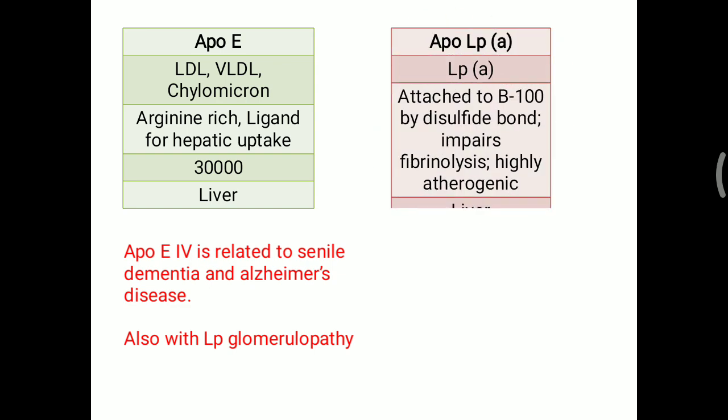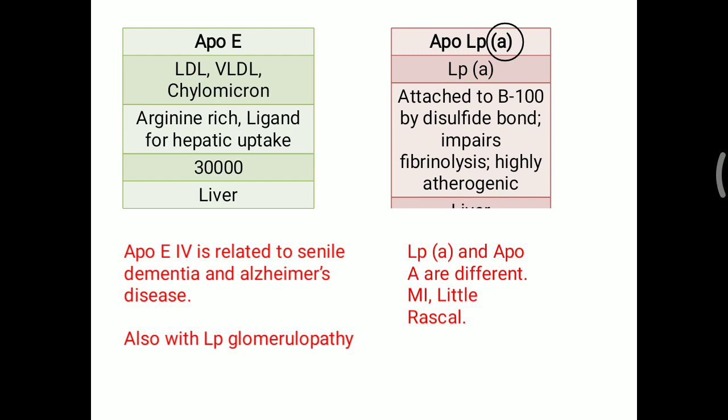Apo Lp(a) — with a small 'a' — is attached to Apo B100 by a disulfide bond. It is important because it impairs fibrinolysis in the body, making it highly atherogenic. Elevated Lp(a) levels are associated with myocardial infarction. Remember: Apo A (capital A) is anti-atherogenic, while Lp(a) (small a) is highly atherogenic — they are completely different molecules. Lp(a) is sometimes called a 'little rascal' due to its association with myocardial infarction.